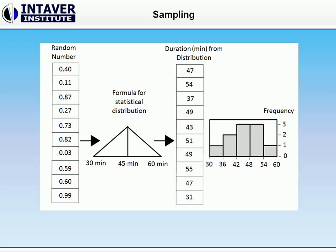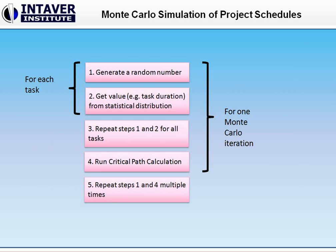Monte Carlo simulation of the project schedule includes five steps. Step 1: generate a random number for each task. Step 2: get a value from the statistical distribution. Step 3: repeat this process for all tasks, so the duration value will be taken from the statistical distribution for all tasks. Step 4: enter the duration values obtained from the statistical distribution into the critical path calculation algorithm. In our case, the total duration will be the sum of the washing and drying times.